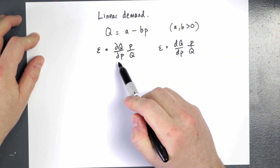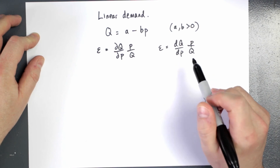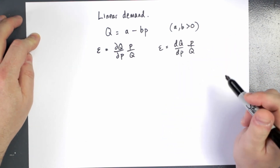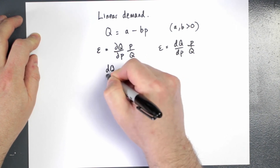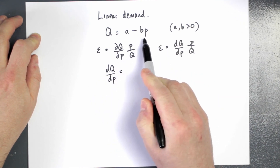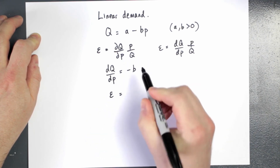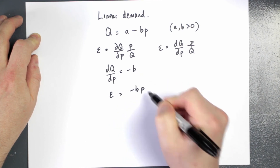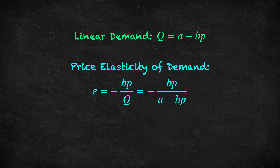We use partial derivative notation when the function depends on several variables; with a single variable, ordinary derivative notation is better. The derivative of q with respect to p is simply the constant slope term minus b, so the elasticity is minus b times p divided by q. For the linear demand function q = a − bp, the price elasticity of demand equals −bp/(a − bp), which we can write as a function of price alone. Notice that elasticity varies with price.